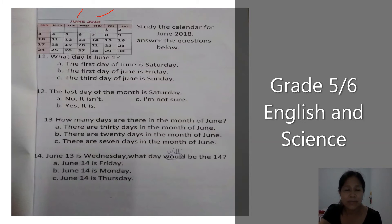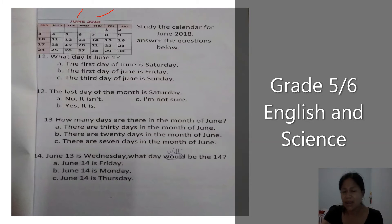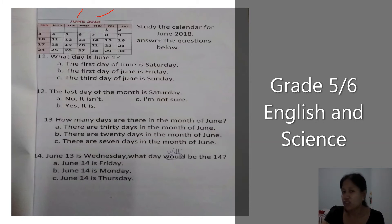This is the first day and this is the last day. Counting through the days of the week: Sunday, Monday, Tuesday, Wednesday, Thursday, Friday, Saturday — the last day of the month is Saturday. A — no, it isn't. B — yes, it is. C — I'm not sure. Choose the correct answer.